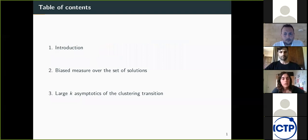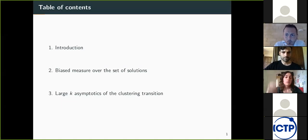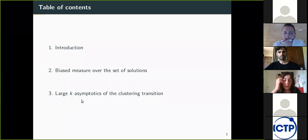This is the outline. I start by giving some definitions and introducing some of the phase transitions that arise in random constraint satisfaction problems. Then I define the biased measure that we have studied and its effect on the clustering transition. Then I look at the particular case of the large-k limit, where k is the number of variables involved in one clause.